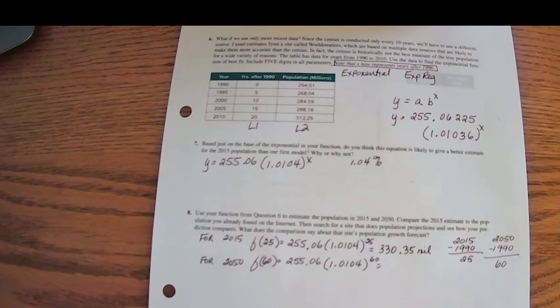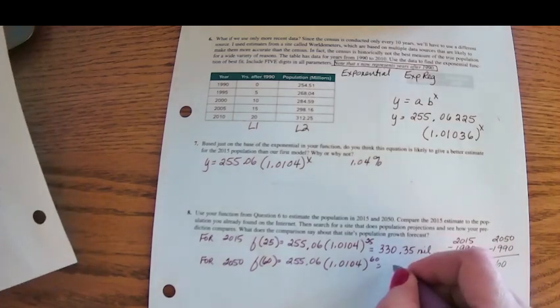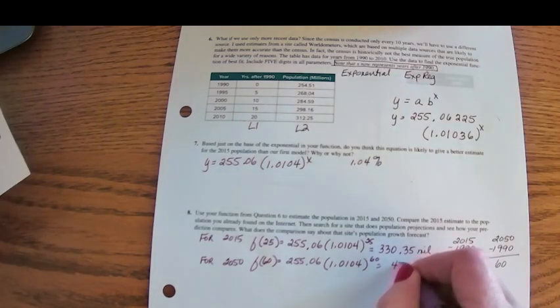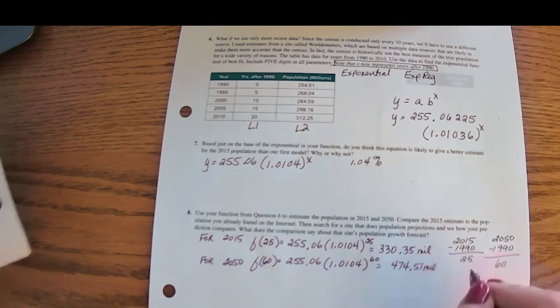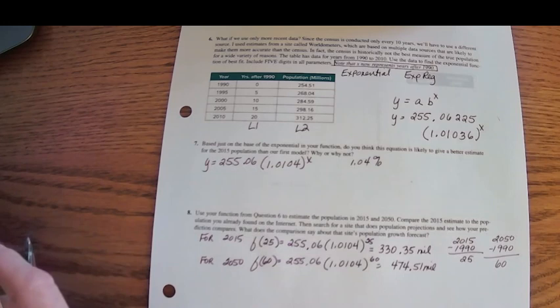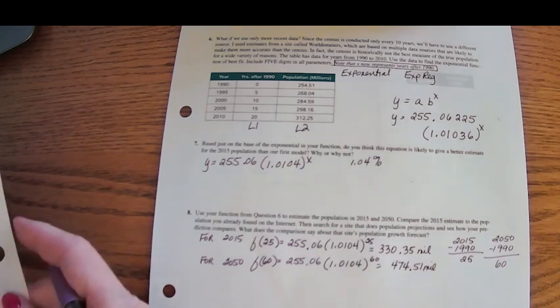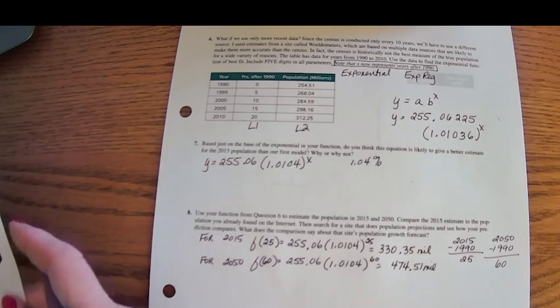255.06 times 1.0104 raised to the 60. And so in this model, the estimate for the year 2050 is going to be 474.51 million people in the U.S.